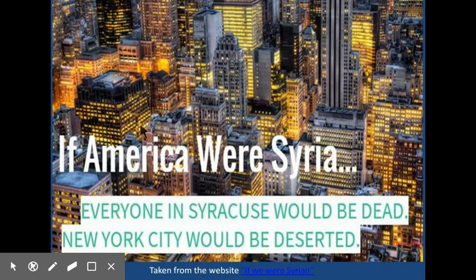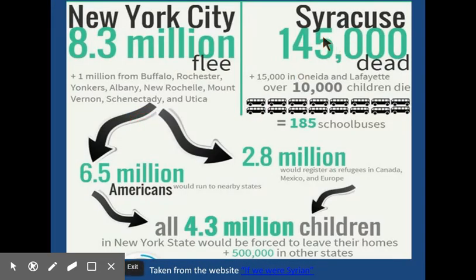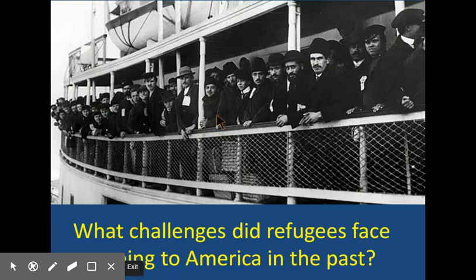Just to put some of this in perspective in terms of the numbers we're talking about: if the United States were Syria, everyone in the city of Syracuse would kind of be dead, and more than half of the people in New York City would have fled — people have gone to Canada. It's a huge, huge problem. That's basically why people are fleeing Syria and the root causes of this conflict.